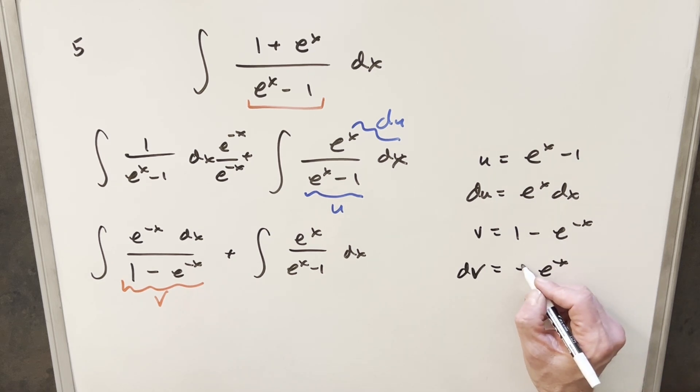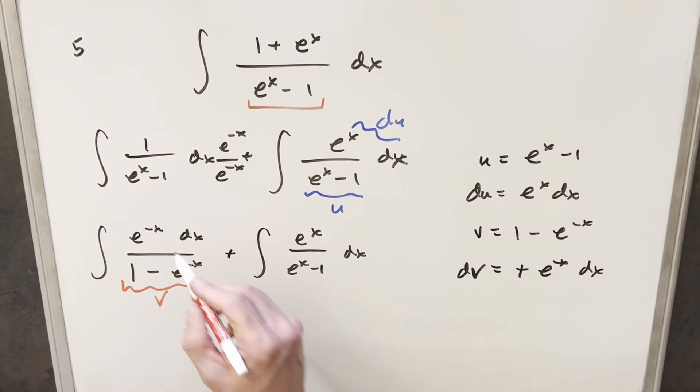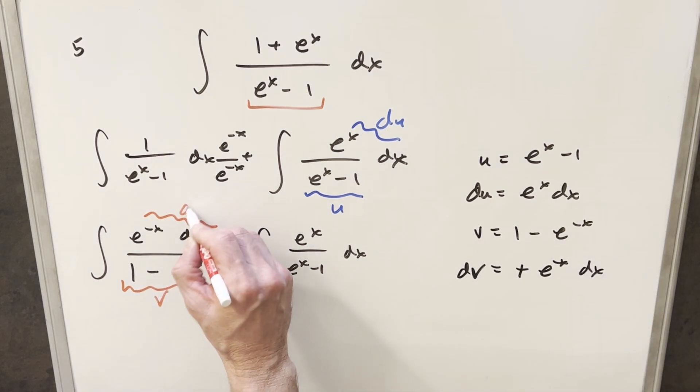Chain rule, derivative of minus x is minus 1. This becomes a plus. Then we get a dx. But then we have our dv right here.